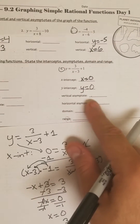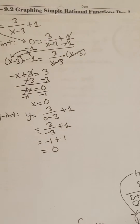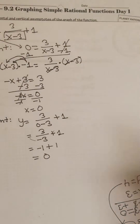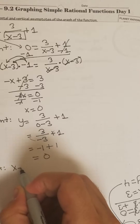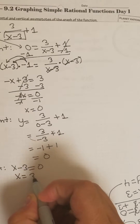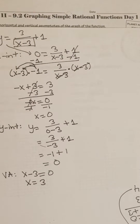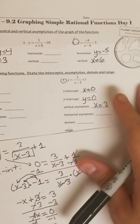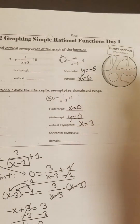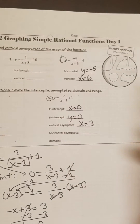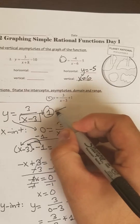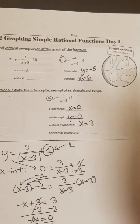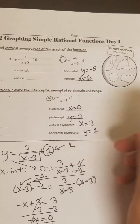Vertical asymptote — remember, we've got to set the denominator to 0 for that one. Our denominator is x minus 3, so let's set that to 0. That means x equals 3 if you add 3 to both sides. So vertical asymptote: x equals 3. Horizontal asymptote — remember, it's going to be our k value. In this case, my k value is 1, so horizontal y equals 1. You can go straight to that answer as long as you can identify the k.